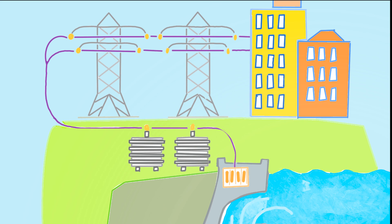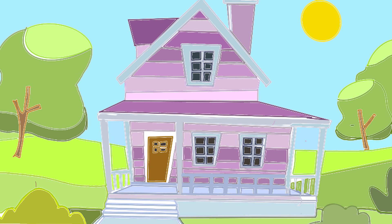Dams are built for flood control, irrigation, hydropower generation, and of course to ensure a reliable water supply for communities. But how do these dams lead to water flowing effortlessly into our homes?